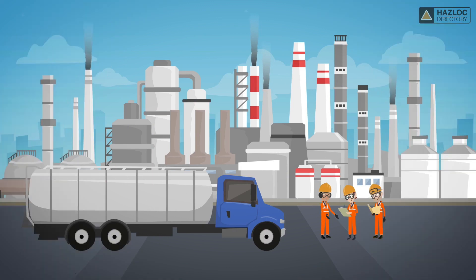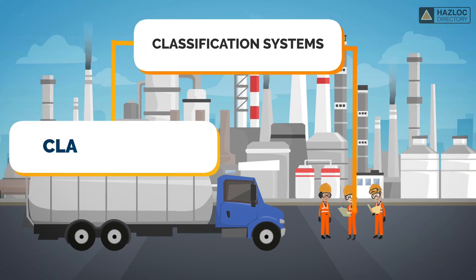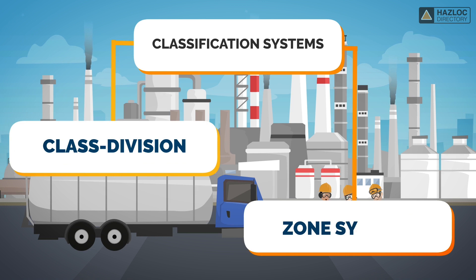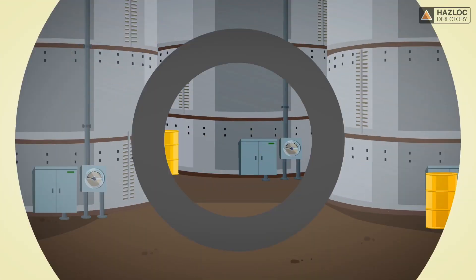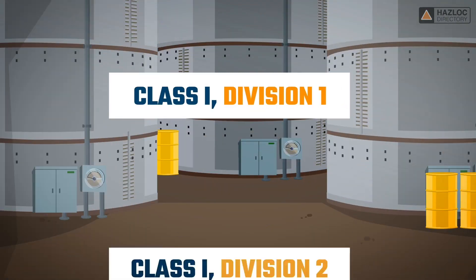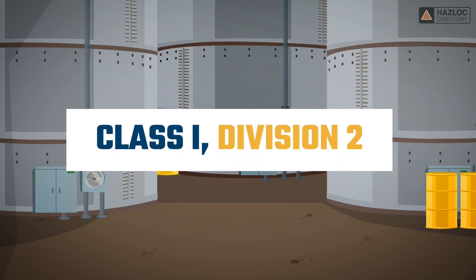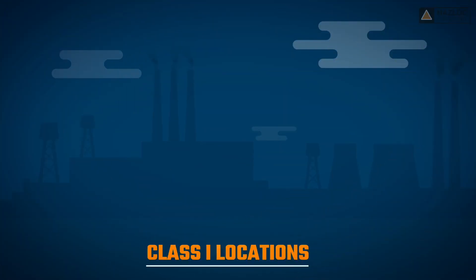Hazardous locations are classified in North America using two different classification systems: the class-division system and the zone system. It is important to know how they differ. This animation focuses on Class 1, Division 2.